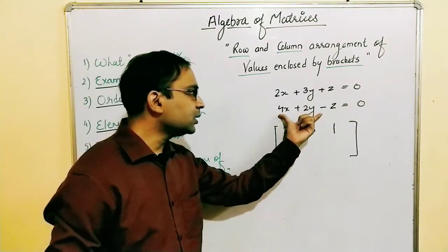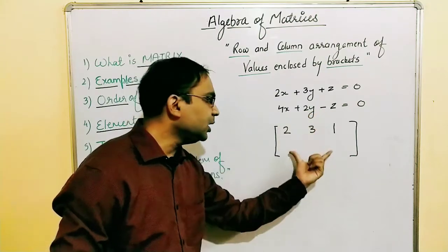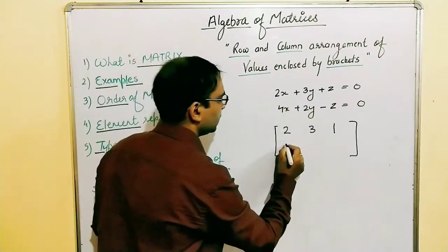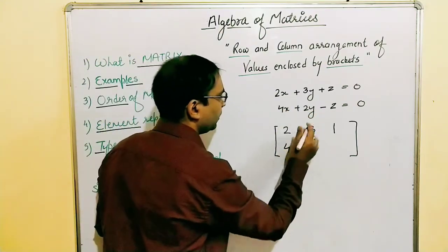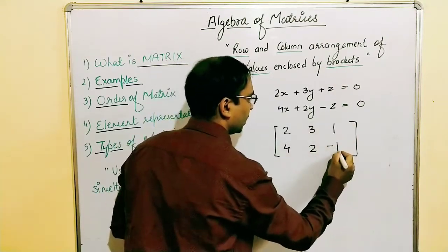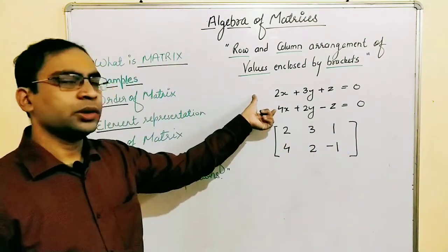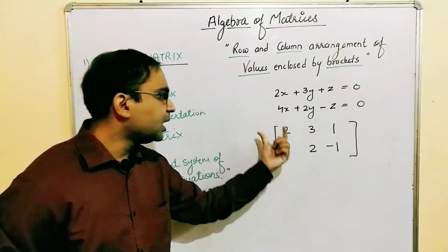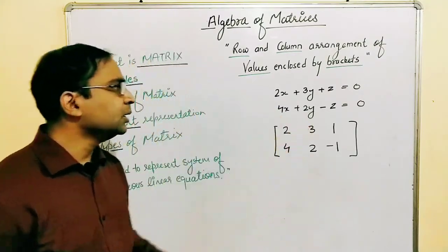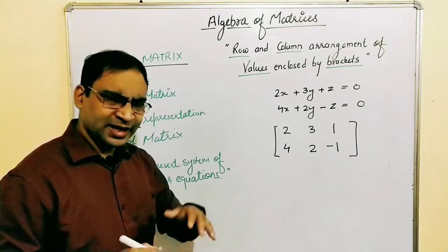The coefficients of the second equation will be written in the second row: 4, 2, and −1. So this system of equations is represented by this matrix. This is the basic representation of the matrix.